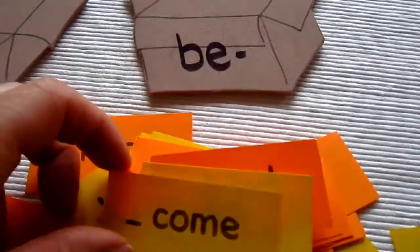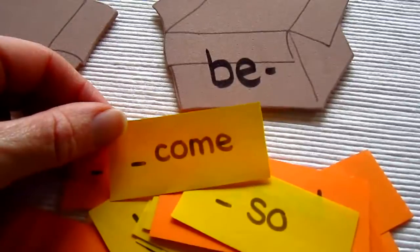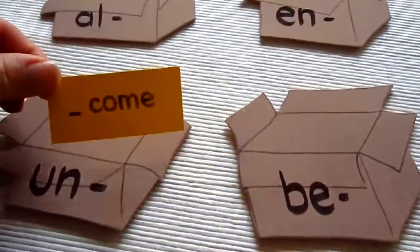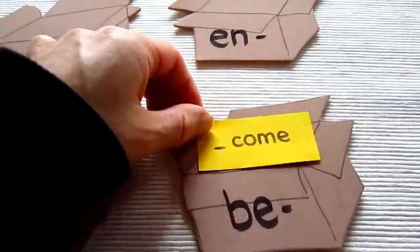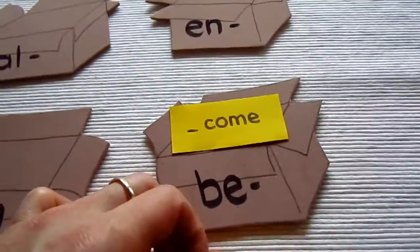So what a child has to do is read the word, read the root word, and see which prefix would fit best. And put it on top of the box, like this. Become.